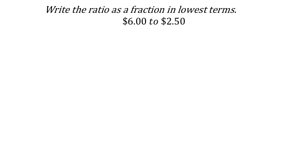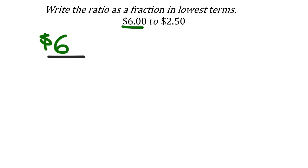Now let's write this ratio as a fraction in lowest terms. We have six dollars to two dollars and fifty cents. A common mistake is to think it's always the big number as the denominator — but that's not so. The first number is always the numerator. Six dollars is the numerator even though it's bigger; placement in the wording and relationship to the word 'to' determines it.